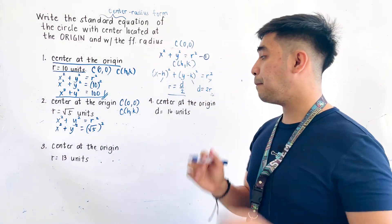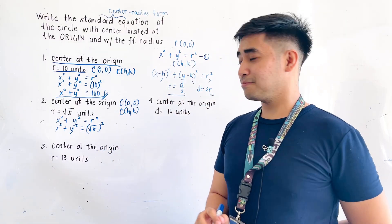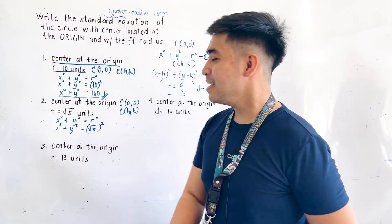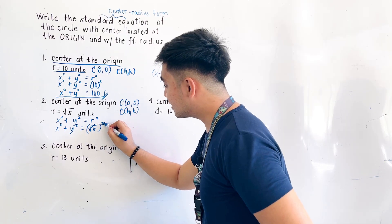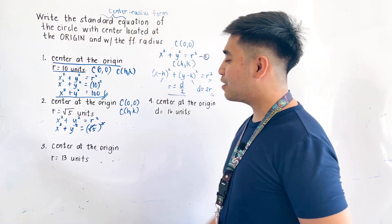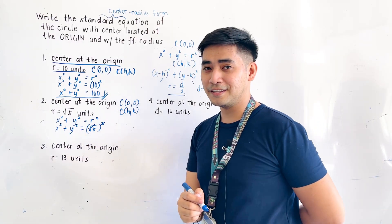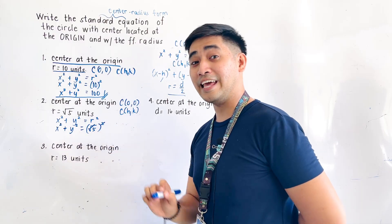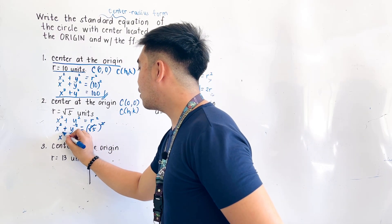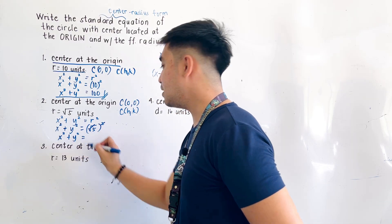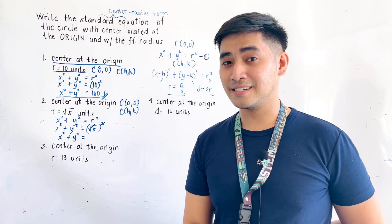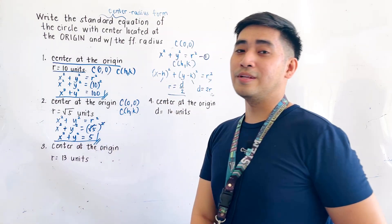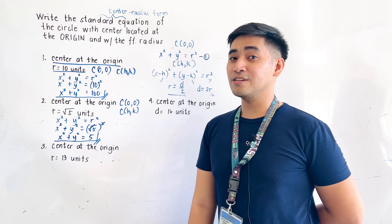Since we have a square root being squared, the square root and the square cancel each other out. Simplifying, x squared plus y squared is equal to 5. That is the equation of the circle with center at the origin and radius equal to the square root of 5.